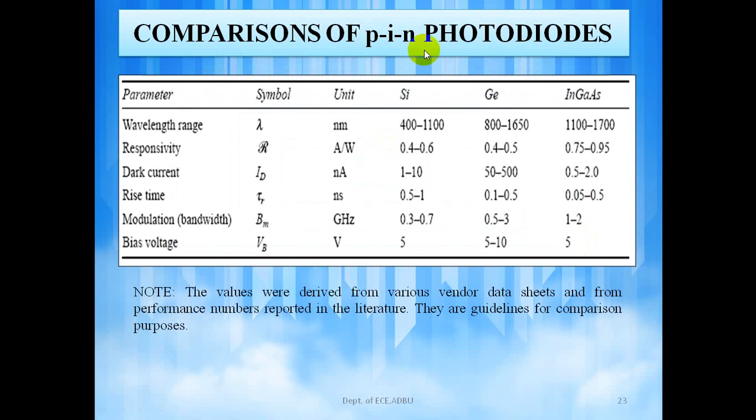Now, we shall see the comparison of the PIN photodetector fabricated by the different materials. As we can see, the wavelength range for the silicon photodetector is the least while indium gallium arsenide is the highest. It is the same case for responsivity as well as modulation. Whereas for dark current, the value is least for indium gallium arsenide while maximum for germanium. And for the rise time value, for silicon lies between 0.5 to 1, for germanium lies between 0.1 to 0.5, and for indium gallium arsenide it lies between 0.05 to 0.5. And bias voltage of silicon and indium gallium arsenide is same, that is 5V, and for germanium it varies from 5V to 10V.